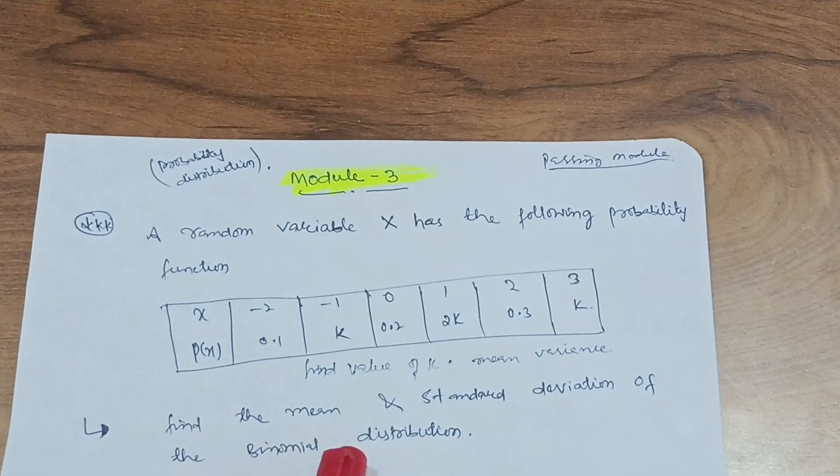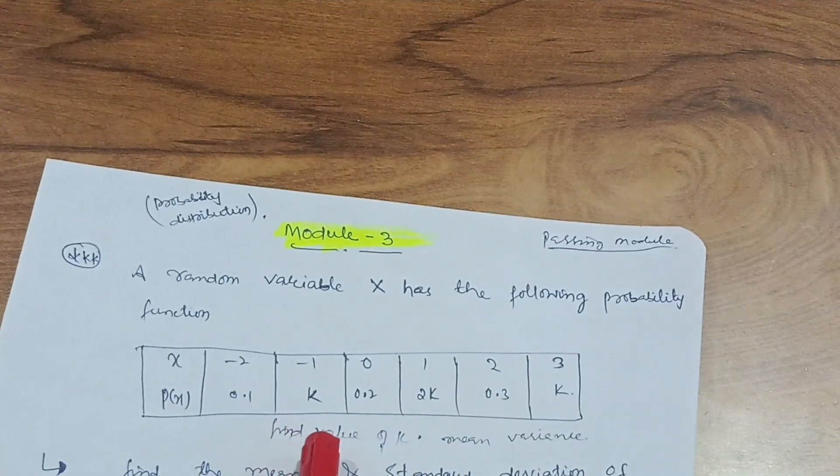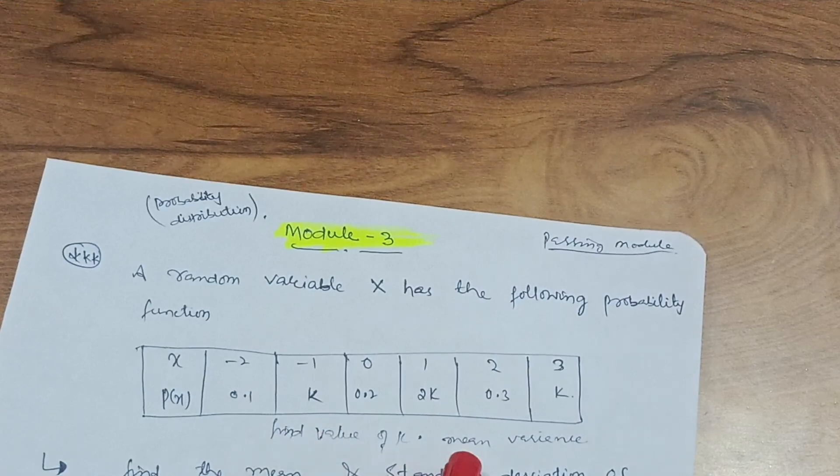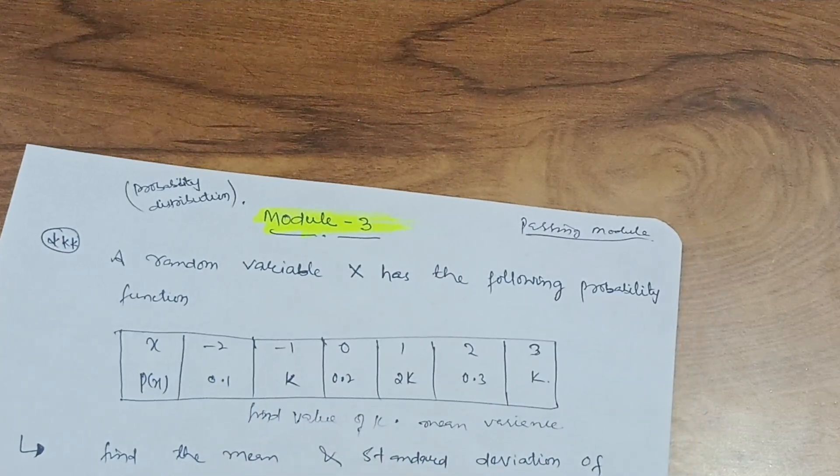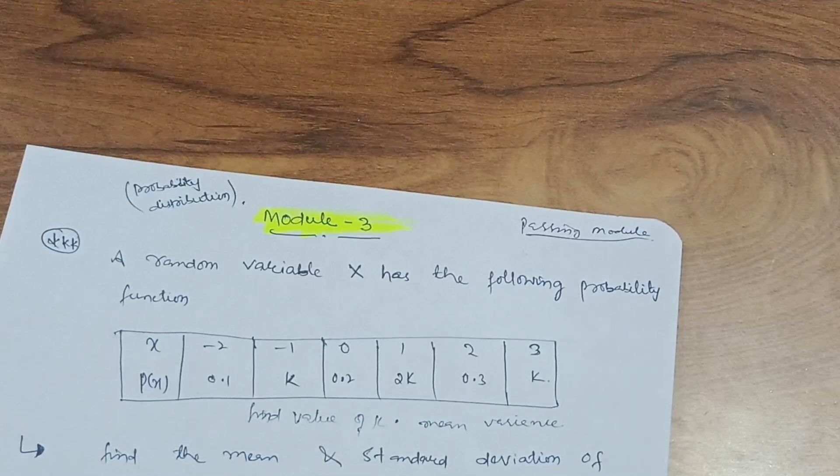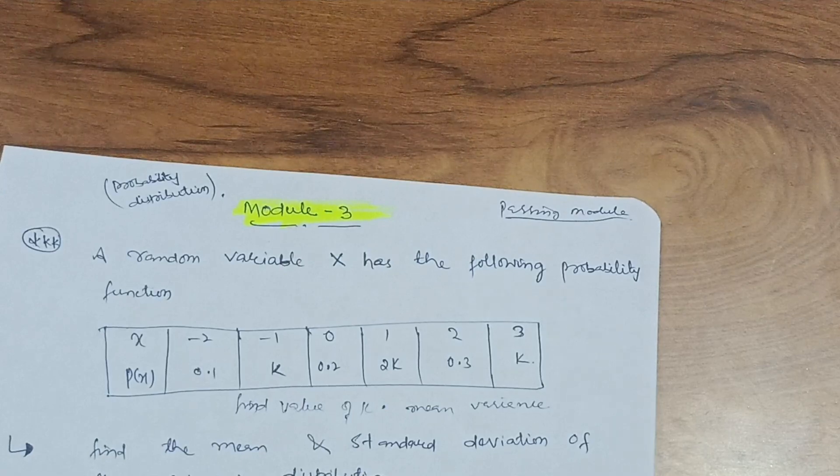So 0.1, k, 0.2, 2k, 0.3, k. What you have to do here is find value of k and mean variance. And also find the mean and standard deviation of a binomial distribution or sometimes they will ask you Poisson's distribution. These two are the derivations which you have to cover in this particular module.